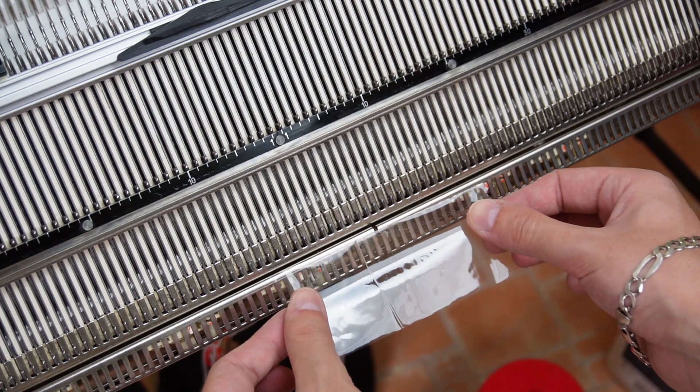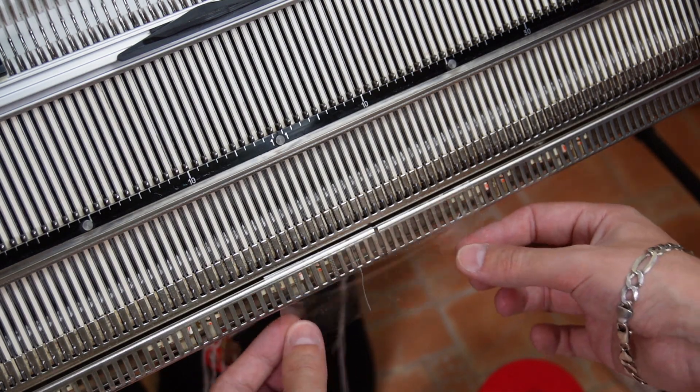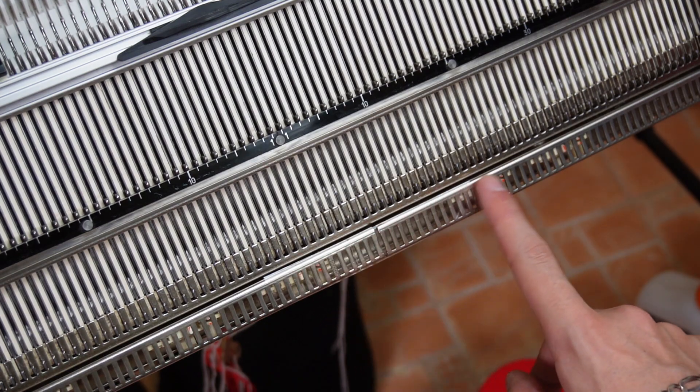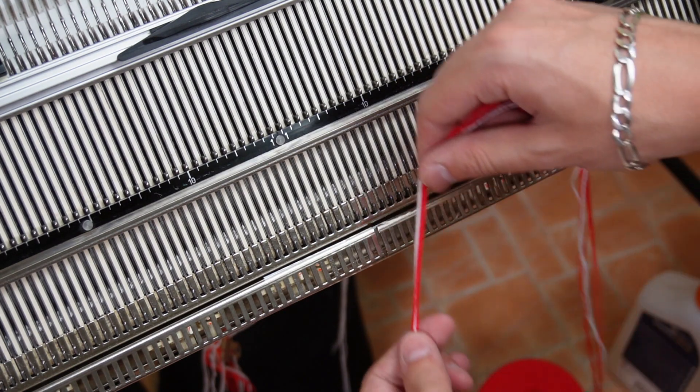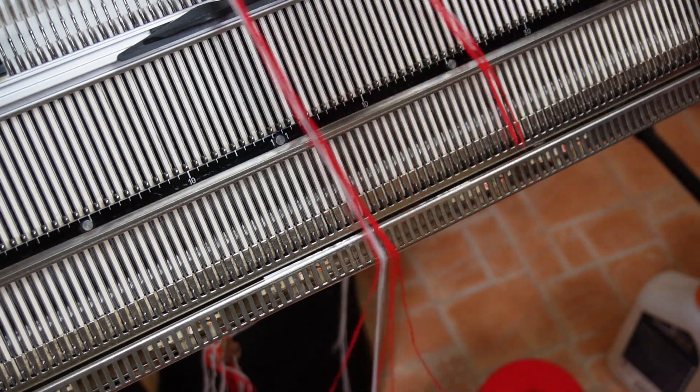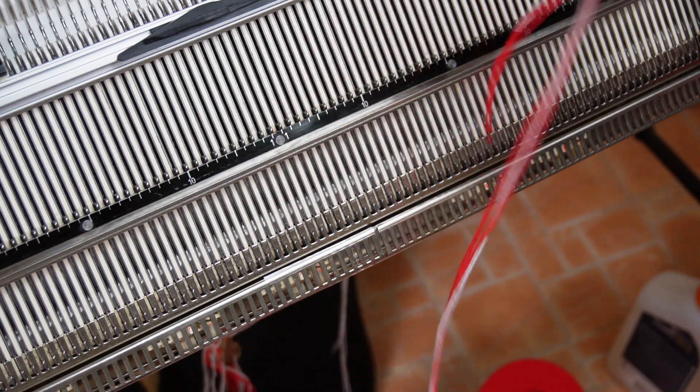You will thank me for this tip. Take a piece of duct tape and put it over the slot in the center of the rail. This way the yarn strands won't get inside. Now let's begin knitting.